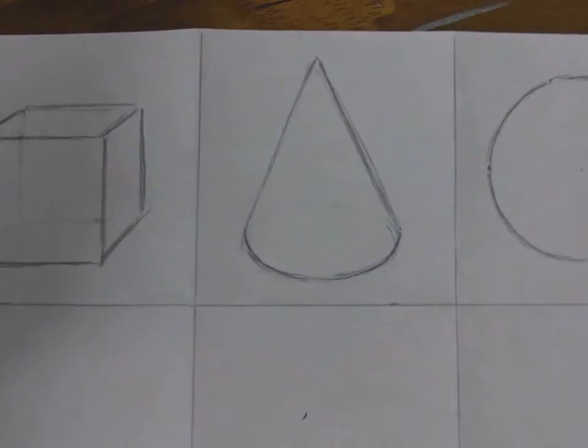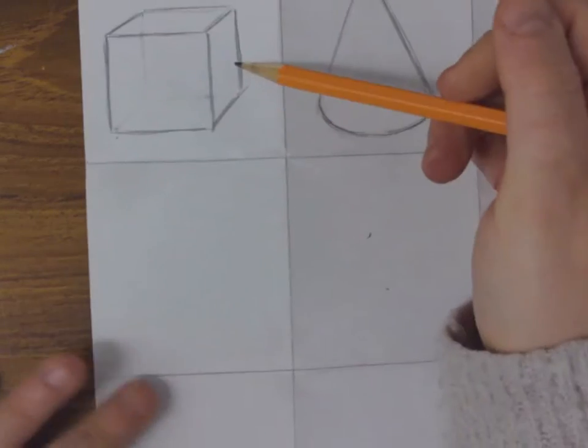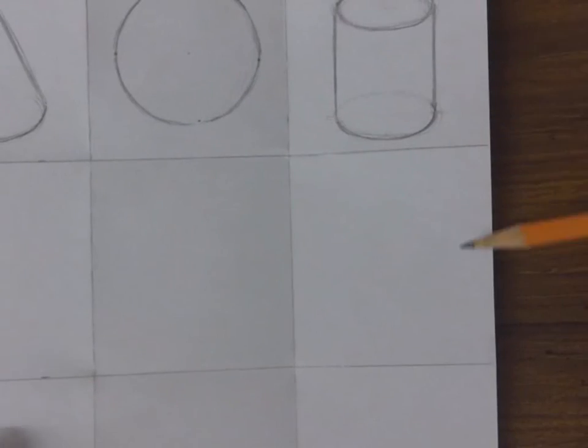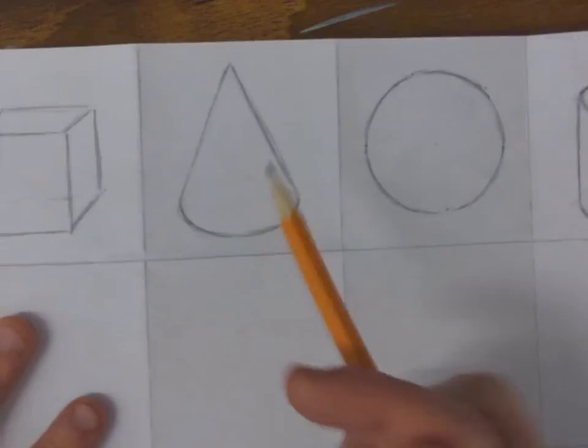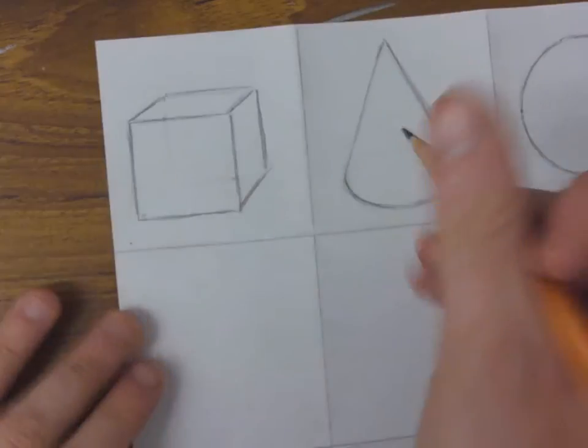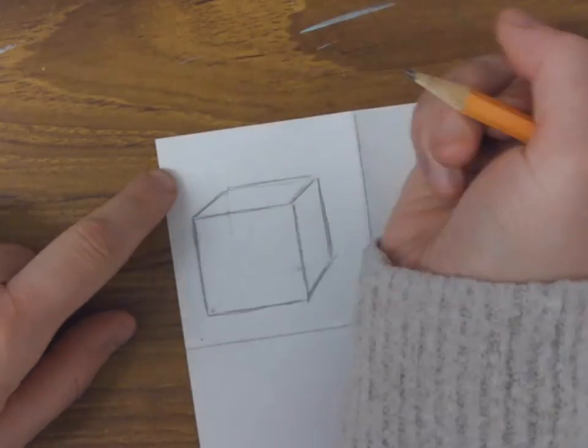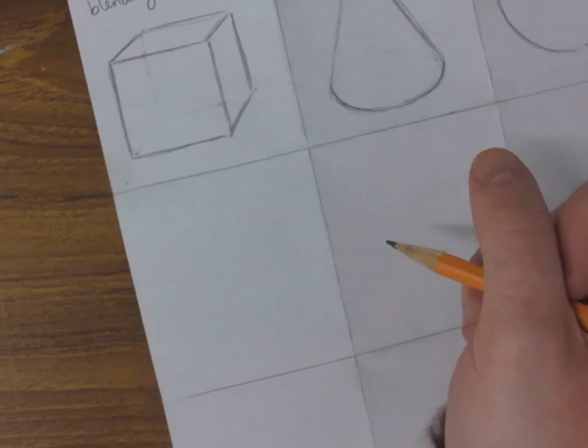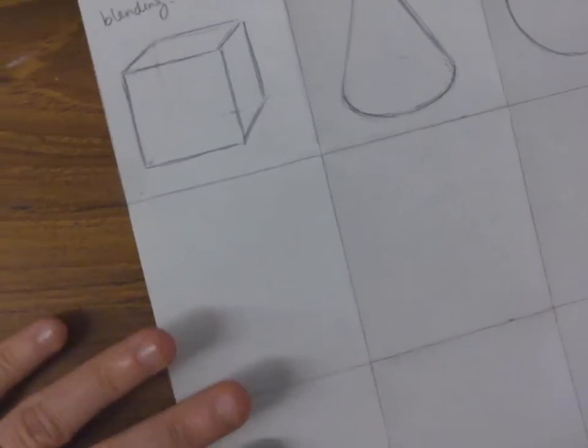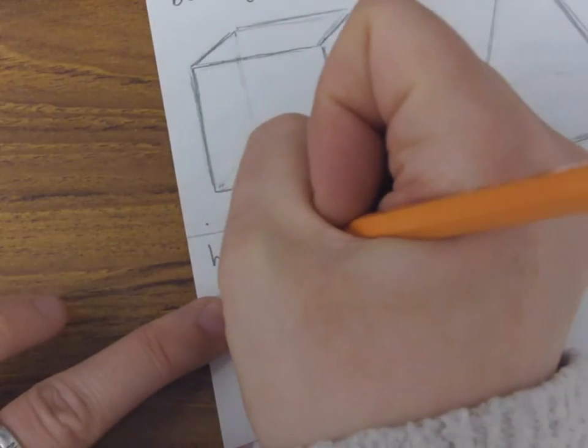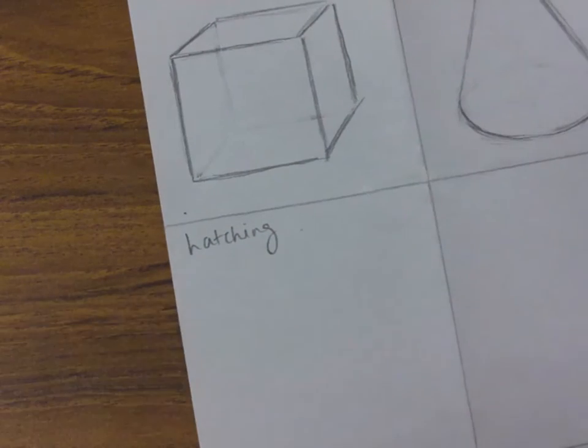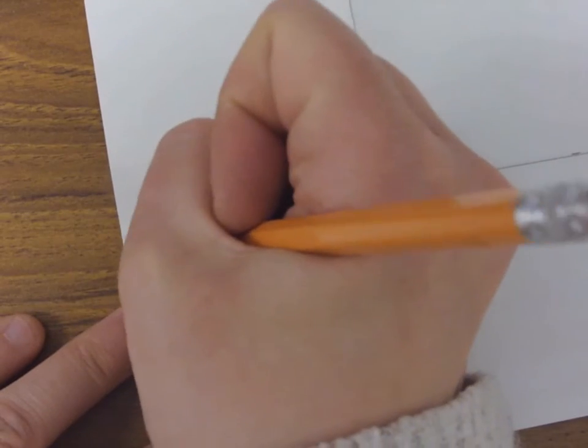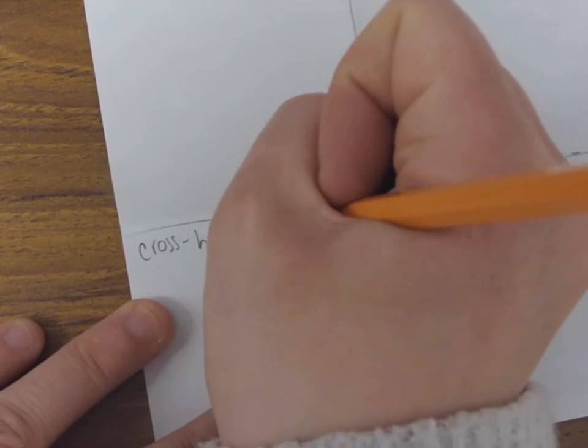So basically, if you want, before you even get started, you can draw your three cubes, your three cones, and your three circles, and then your three cylinders if you'd like. Or you could do one at a time and then fill them in as we go. Again, the top one that we're doing right now in class is blending. So I'll label this one blending. The second one I'm going to do is going to be done in hatching. So for the second one, I'm going to label it hatching. And for the last one, I'm going to label it cross-hatching.